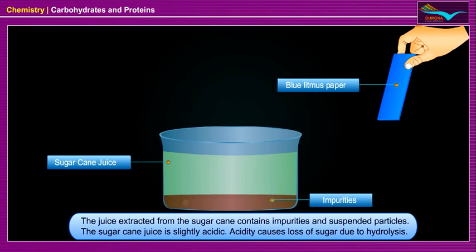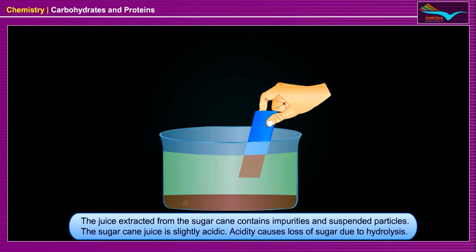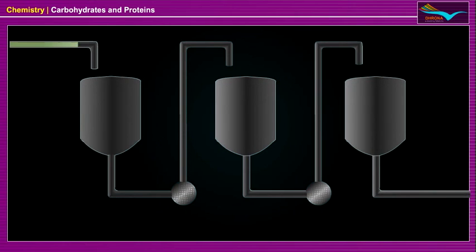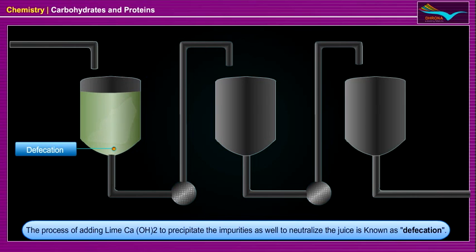The juice extracted from the sugarcane contains impurities and suspended particles. The sugarcane juice is slightly acidic. Acidity causes loss of sugar due to hydrolysis. The process of adding lime, Ca(OH)2, to precipitate the impurities as well as to neutralize the juice is known as defecation.